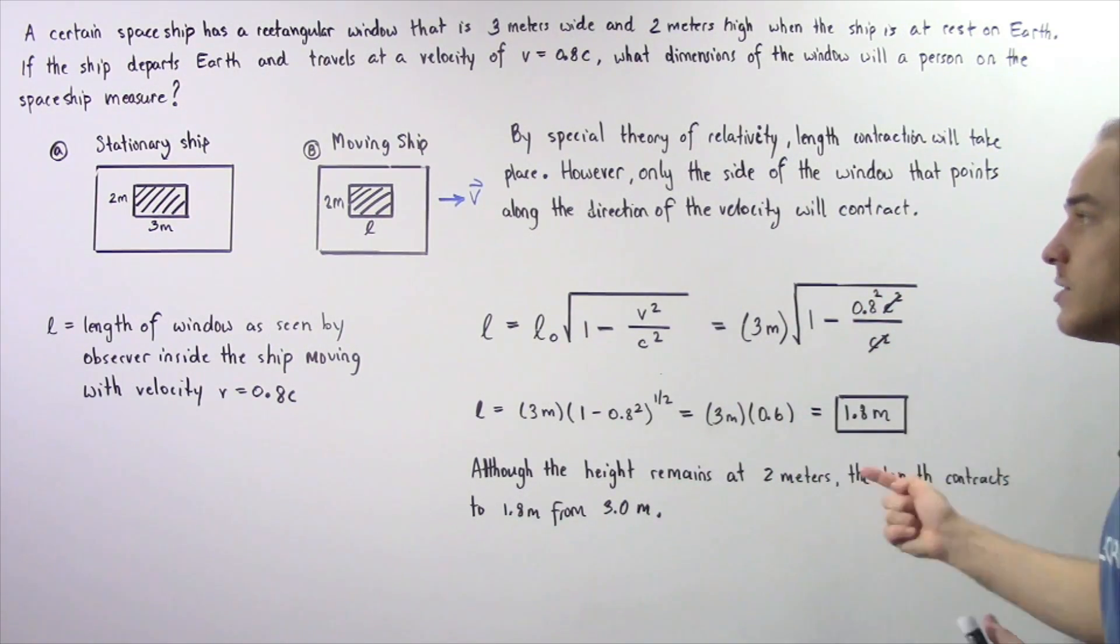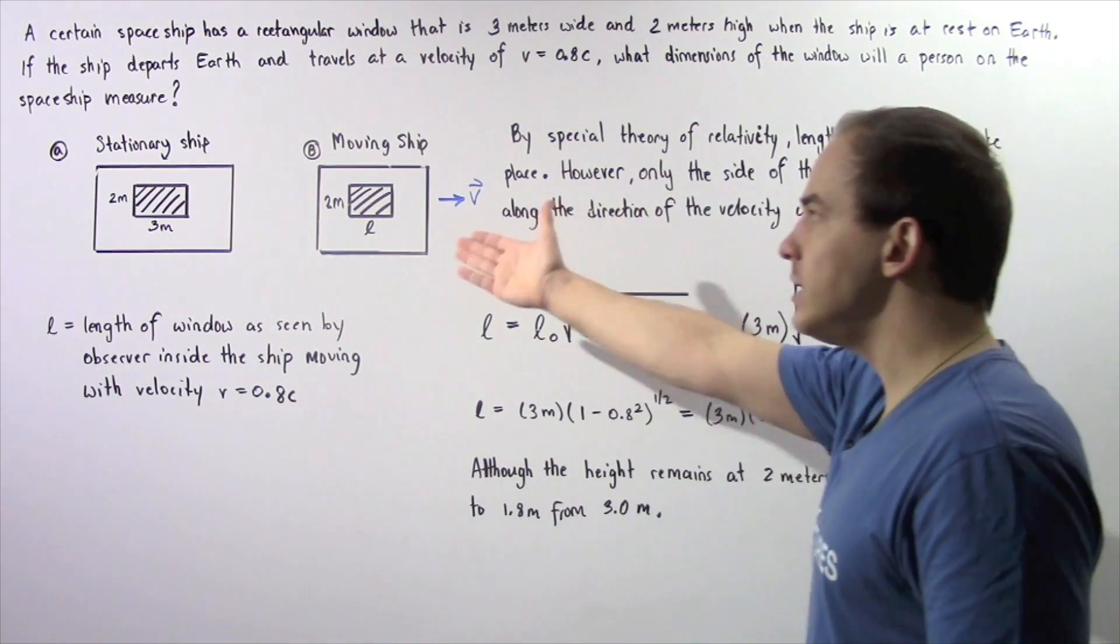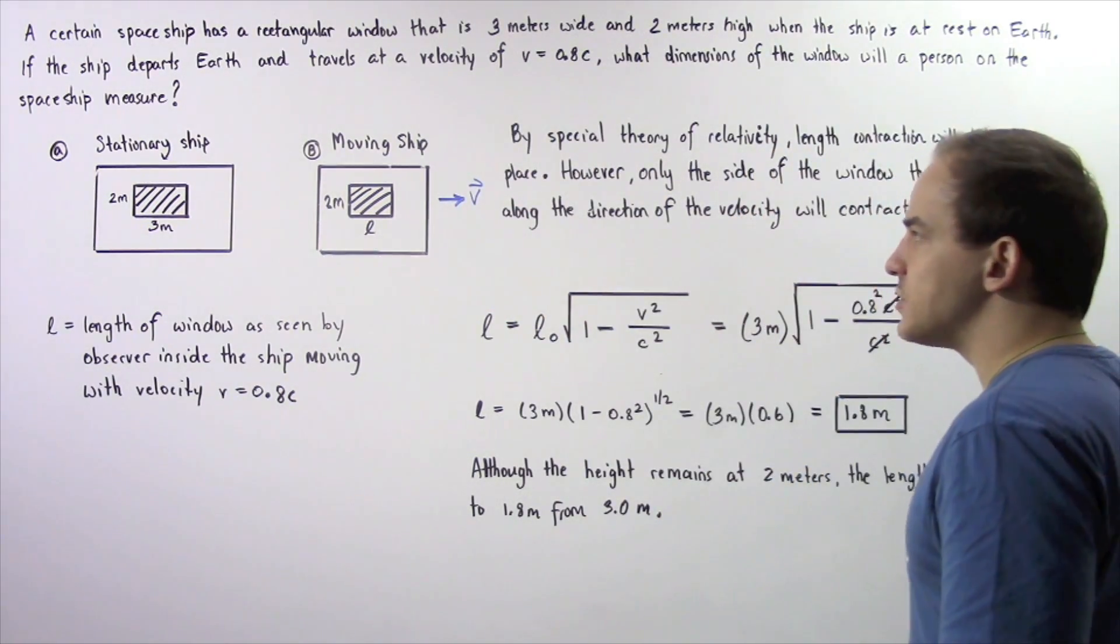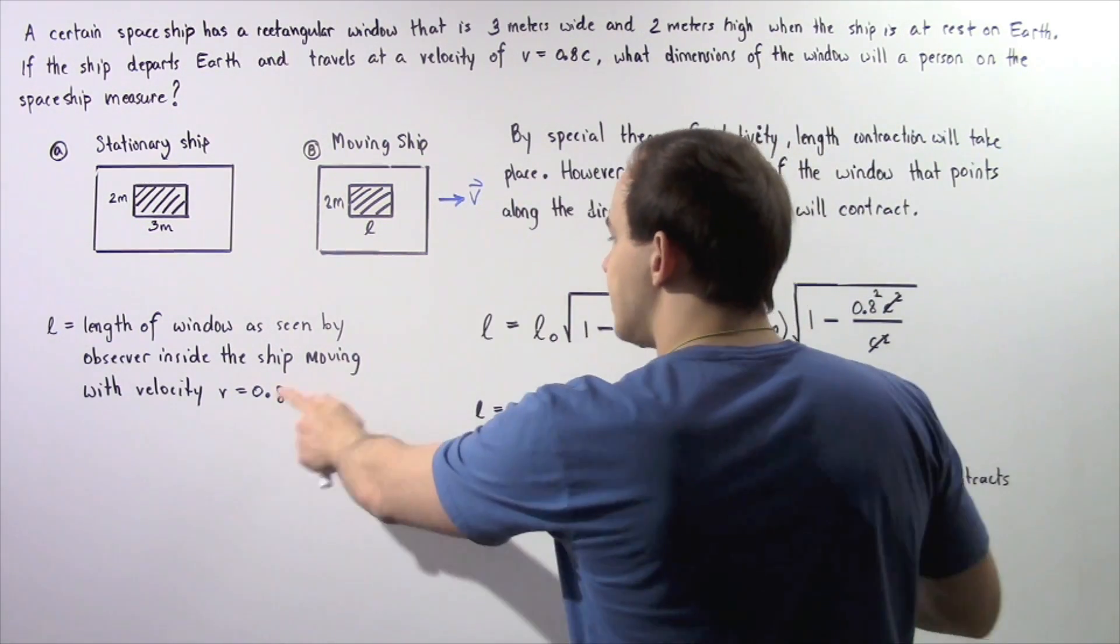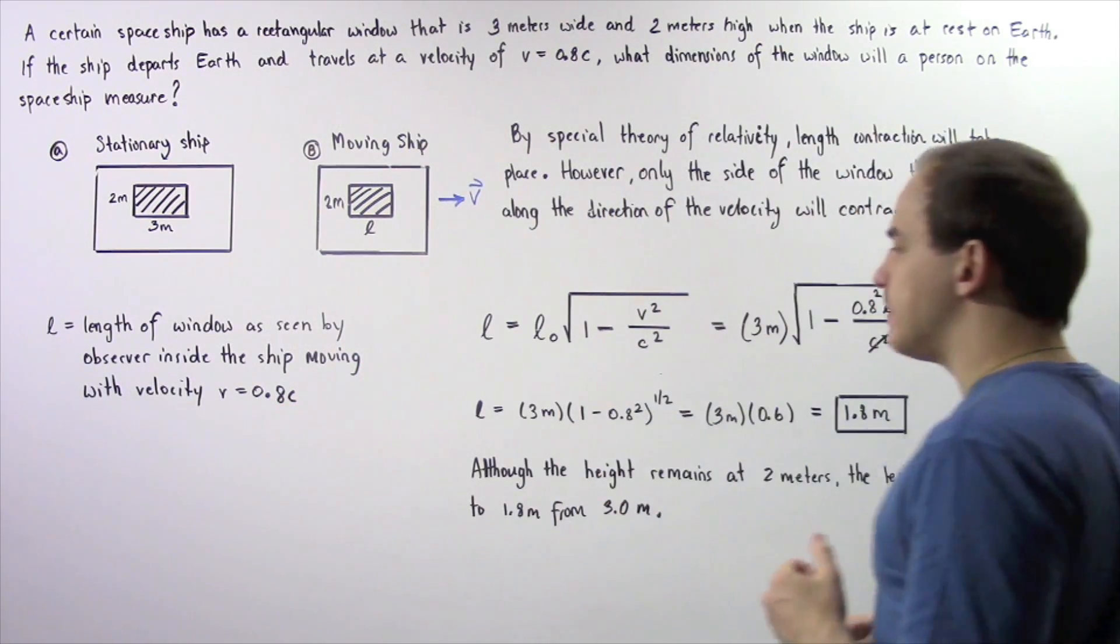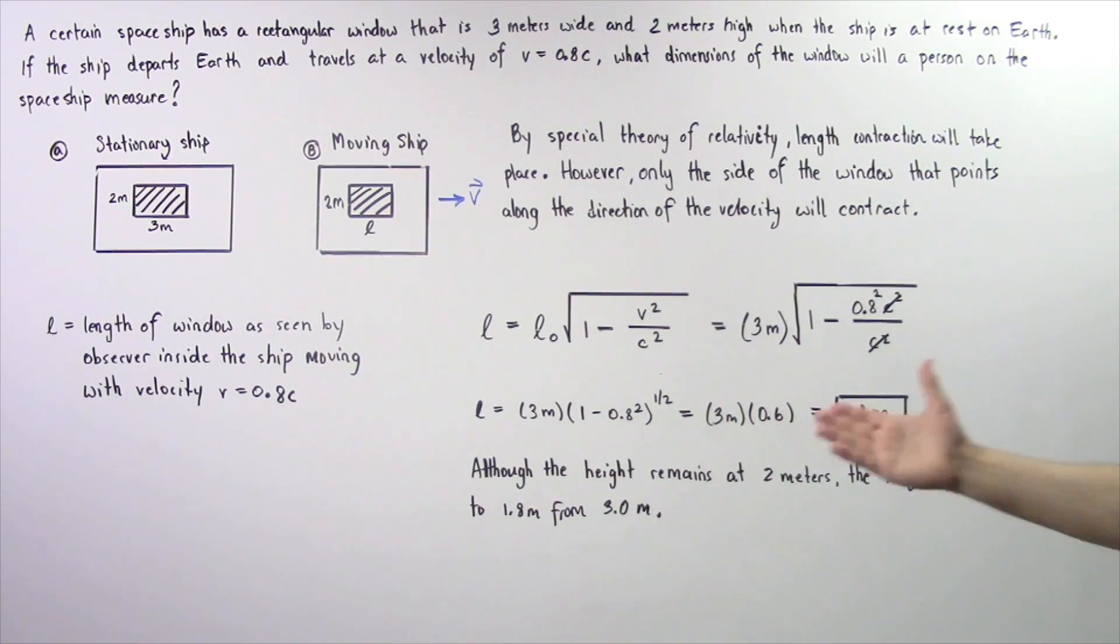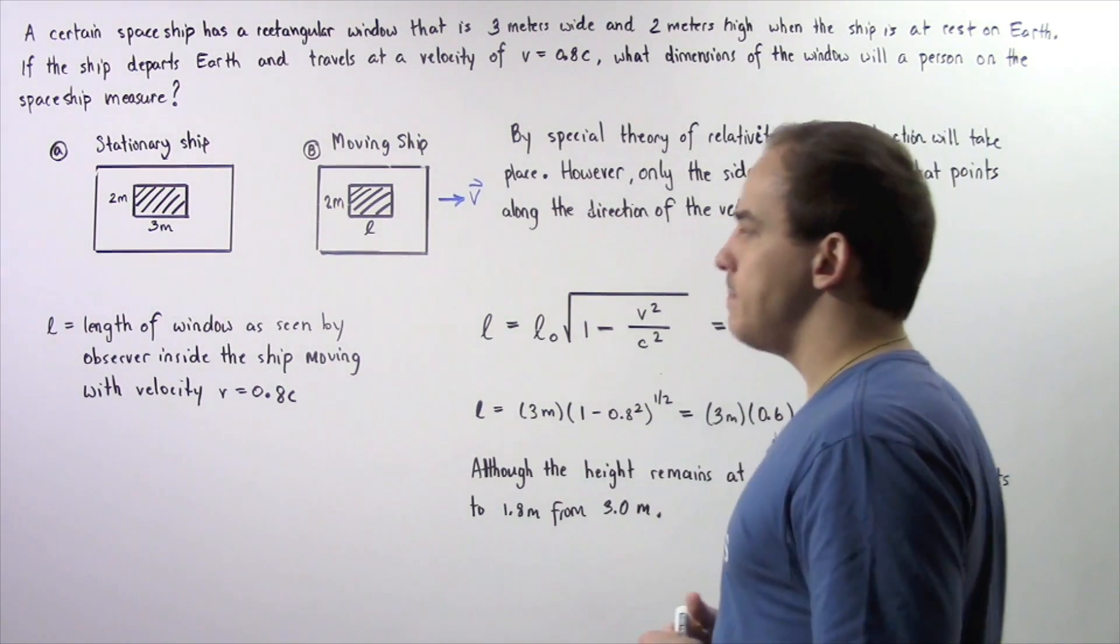So 1.8 meters is the width of our window when the spaceship is moving with a velocity of 0.8 multiplied by C. Although the height of our window remains the same at 2 meters, the length contracts to 1.8 meters from 3 meters.